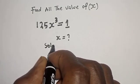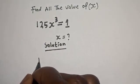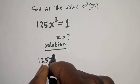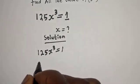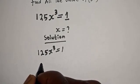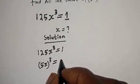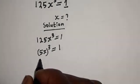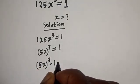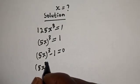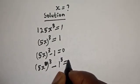Solution: we have 125s raised to power 3 is equal to one. This can be written as (5s) raised to power 3 is equal to one. Bringing one to this side, we have (5s) raised to power 3 minus 1 is equal to zero, which is also (5s)³ minus 1³ is equal to zero.